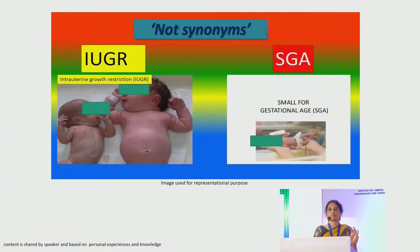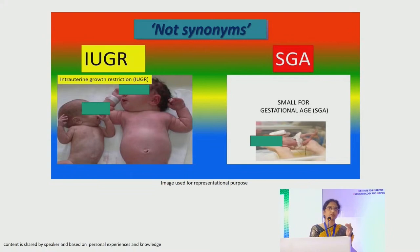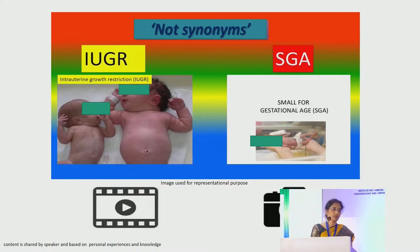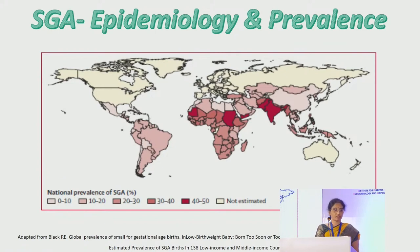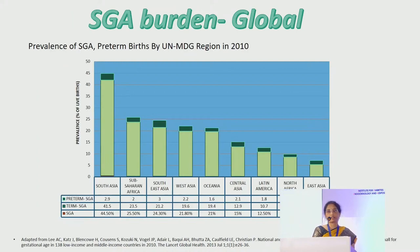IUGR and SGA are not synonymous. IUGR — intrauterine growth retardation — should be used only when serial measurements of fetal growth are available. Most fetuses with IUGR can be born SGA, but sometimes they may not be. Regarding epidemiology, worldwide prevalence is high, with Southeast Asia showing 40–50% prevalence in red. India is estimated to have the largest number of SGA infants compared to any other country.